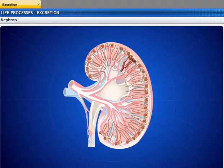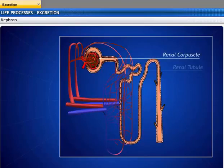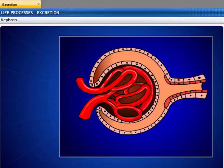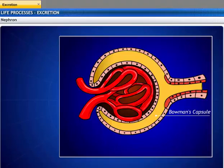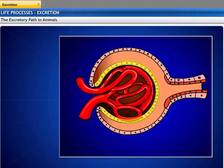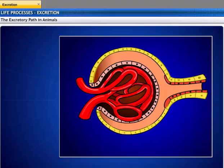Each kidney contains about one million nephrons. Each nephron consists of a corpuscle and a renal tubule. A corpuscle is composed of tangled clusters of tiny blood capillaries called the glomerulus, which is the filtration unit. A thin-walled, sac-like structure called Bowman's capsule surrounds the glomerulus. The inner layer of Bowman's capsule covers the glomerulus, and the outer layer is continuous with the inner layer and with the wall of the renal tubule.